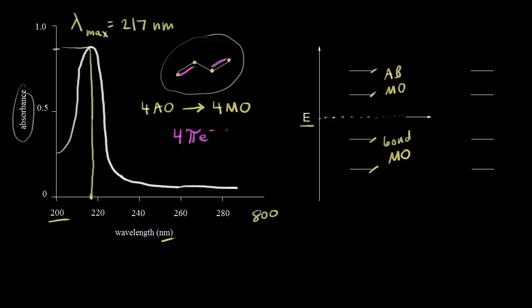When thinking about molecular orbitals, you can think about electron configurations. We have four electrons, and we put them in the lowest energy orbitals first, pairing our spins. So we put two into this bonding molecular orbital with paired spins, and then two into the next bonding molecular orbital. The four pi electrons go into the bonding molecular orbitals in the ground state — this is the ground state of butadiene.